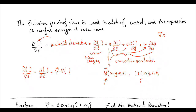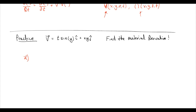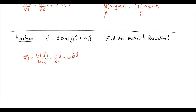Let's do a quick practice. Our velocity field is V = t·sin(y)·î + x·y·ĵ. Find the material derivative of this system. Our acceleration equals the total derivative of velocity with respect to time, which equals the partial of V with respect to time, plus u times ∂V/∂x, plus v times ∂V/∂y, plus w times ∂V/∂z.